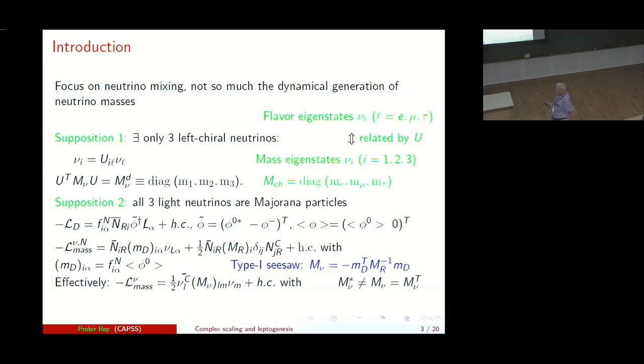My focus today is going to be on neutrino mixing and not so much on the dynamical generation of neutrino masses for which I will assume the type 1 seesaw mechanism. We have the flavor eigenstates and the mass eigenstates related by the unitary matrix U. We take the charged leptons to be diagonal so that the U is nothing but the Maki-Nakagawa-Sakata matrix.